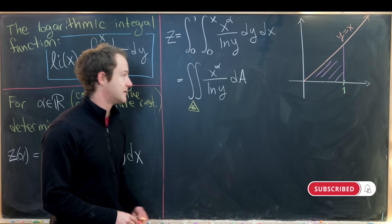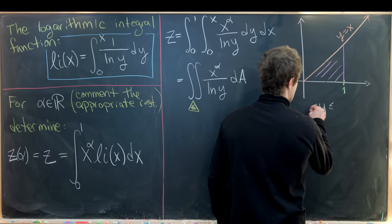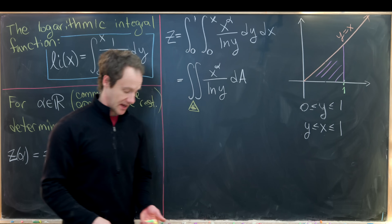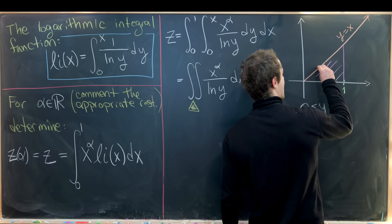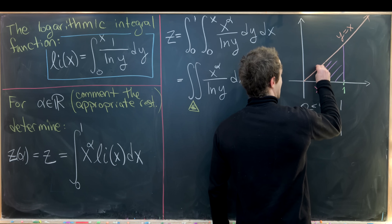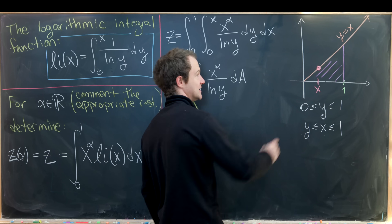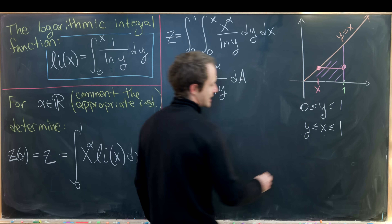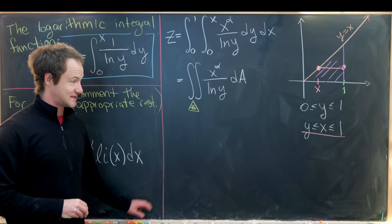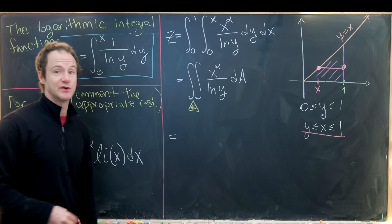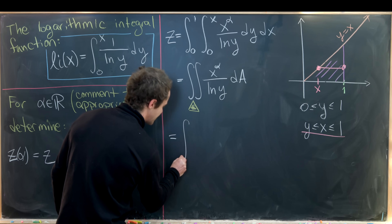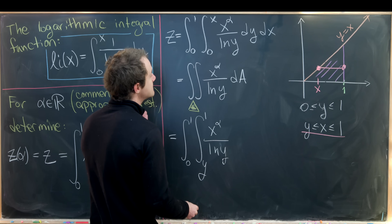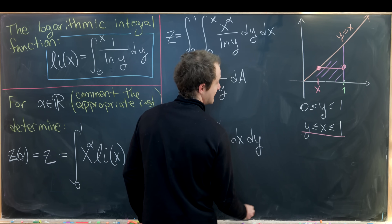Now let's change the order of integration. Looking at the region, y ranges between 0 and 1. For a fixed y, x ranges from the line x = y on the left to x = 1 on the right — that's the leftmost and rightmost extent of the region. So the new iterated integral is the integral from 0 to 1 of the integral from y to 1 of x^α over ln(y) dx dy.